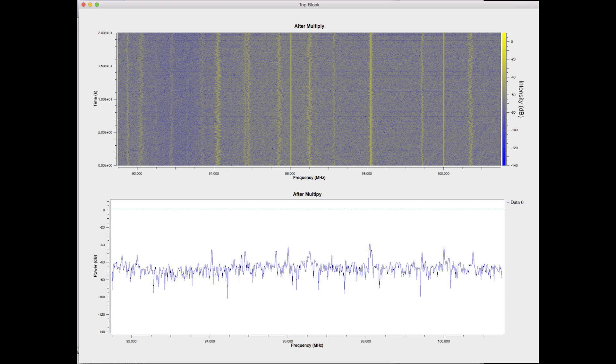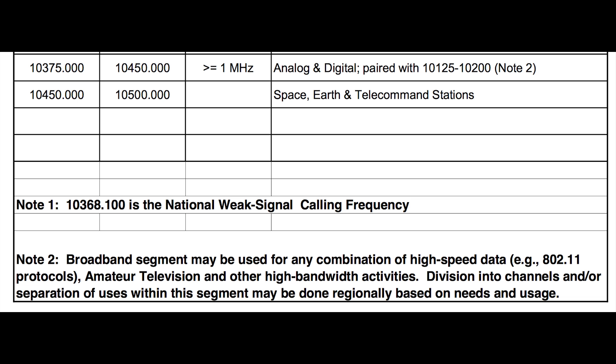Next up is something I wanted to point out to those of you interested in microwave experimentation. Here's the band plan for 10 GHz. Note that our downlink is in the Space Earth and Telecommand subband. Note that right next door is an analog and digital band where bandwidths greater than 1 MHz are welcome. We're looking at making the radio autonomously determine what it's listening to and act accordingly. This is a band plan that works to our advantage since we believe we can use the same IF of 700 MHz for both modes.